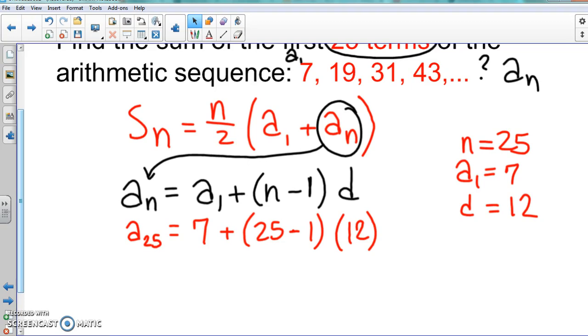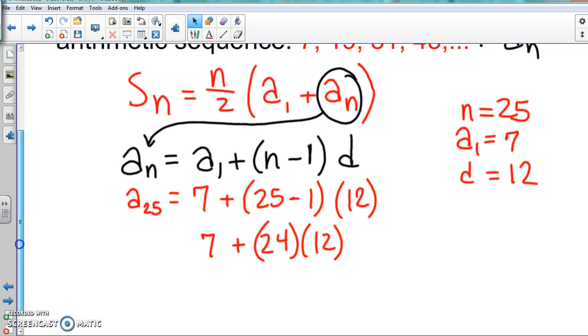The common difference is 12. We need to solve this out or work this out. So here we get 24 times 12, so that's 288.